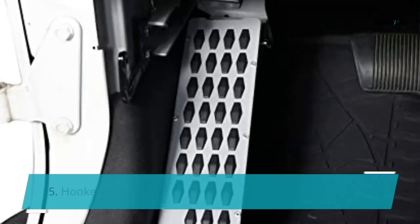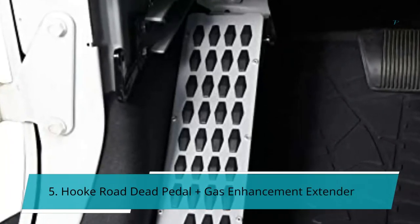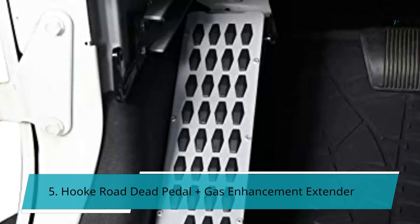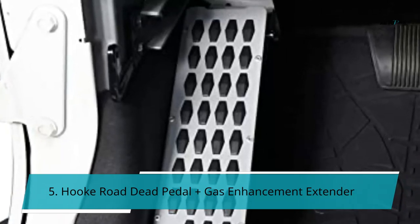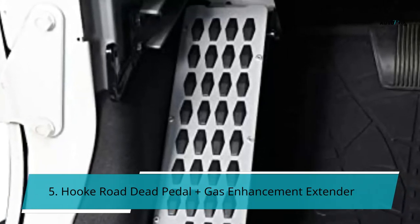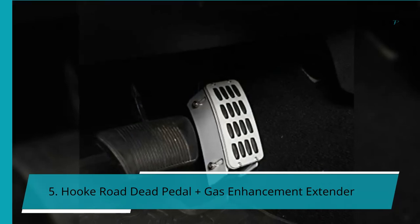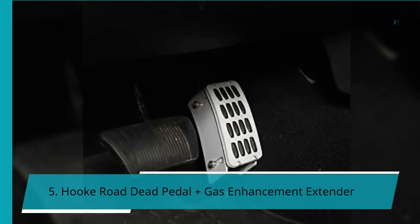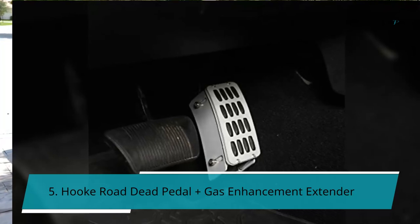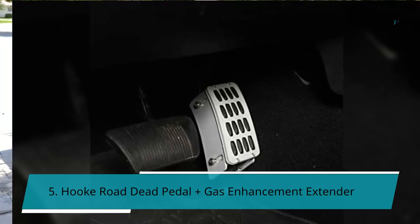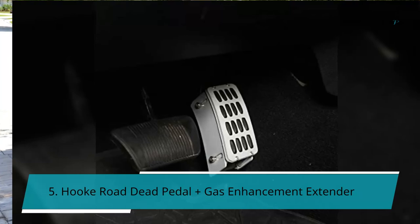Number 5: Hook Road Dead Pedal Plus Gas Enhancement Extender — also compatible with Jeep Wrangler. It is designed to adjust the gas pedal height while treading easily. The lowest and maximum adjustable heights are 2.1 and 2.9 inches respectively. The price is $42.99.